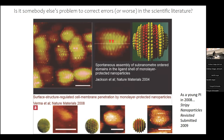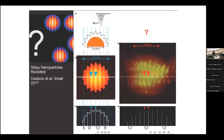It was submitted in 2009 and eventually published in Small. Anyone want to guess what year? It was published in 2012 — so it took three years to be published. A lot of things happened during those two years, and a lot of things happened afterwards once this paper was published. This was my first adventure in correction of science, in raising problematic papers.